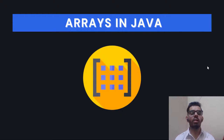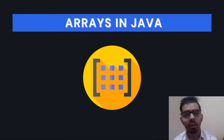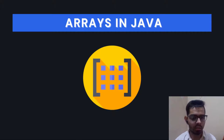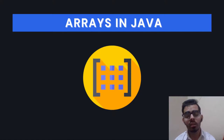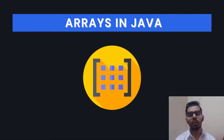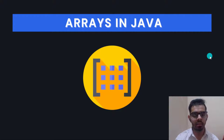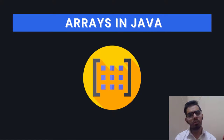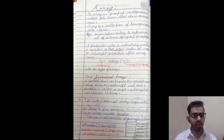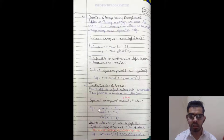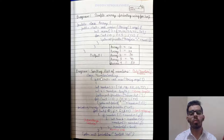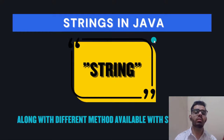After OOP concepts, we have arrays in Java. We learn arrays after classes and objects because Java uses a different syntax for arrays compared to C++. In C++ you simply declare 'int arr[] = value', but in Java the syntax is different, so we learn arrays after understanding classes and objects. I've provided notes on 1D and 2D arrays — how to create and declare them — with proper explanation and programs.